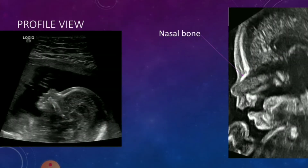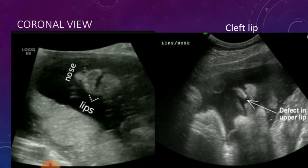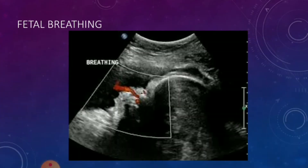Next, you want to look at the face in a profile view. A profile view is good to rule out facial anomalies — you can see the nasal bone, and also the sagittal cerebral structures like the corpus callosum. A coronal face view is important for ruling out facial anomalies like cleft lip. You could also rule out things like a proboscis. In a coronal view with color Doppler on, you may even be able to see fetal breathing, which is important.